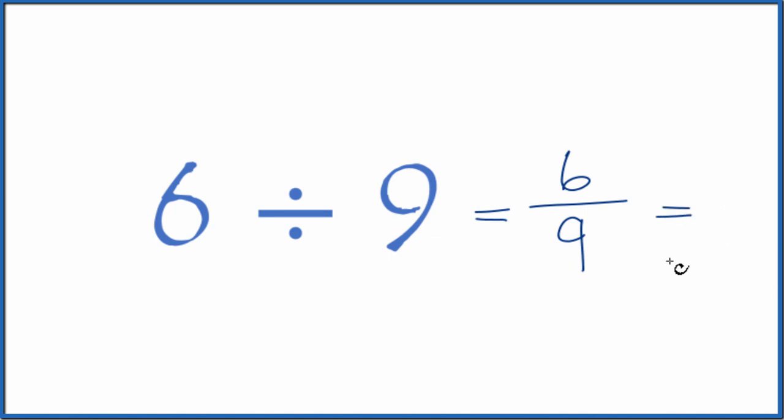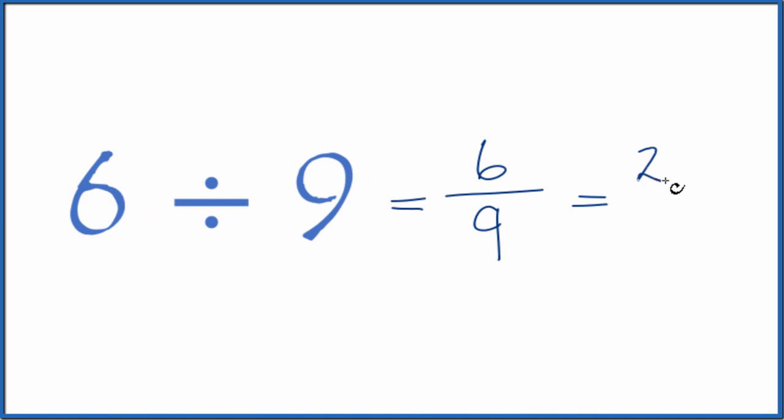We could actually reduce this. We could divide 6 by 3, that gives us 2. 9 by 3, that gives us 3. So, 6 divided by 9 is equal to the fraction 2 over 3, 2 thirds.